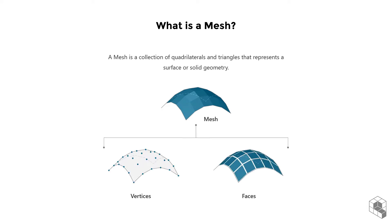In terms of data structure, a mesh contains two lists: a list of vertices and a list of faces.